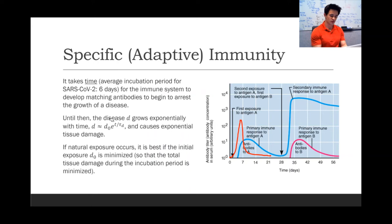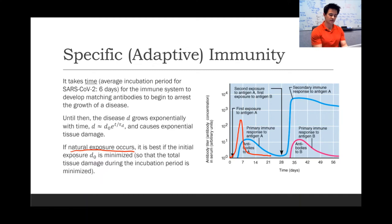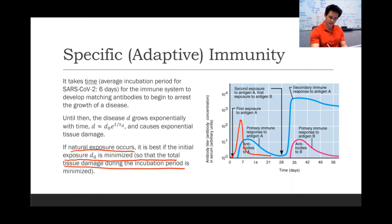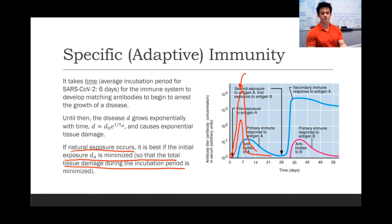If natural exposure occurs — if you catch the real virus — it's best if the initial exposure is minimized, so that total tissue damage during the incubation period is minimized. If the initial exposure is much higher, the viral load within the body and the resulting tissue damage will be much, much higher.